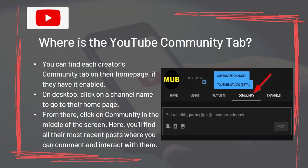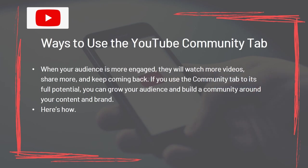You can find each creator's Community Tab on their homepage if they have it enabled. On desktop, click on the channel name to go to their homepage, then click on Community in the middle of the screen to find all their most recent posts where you can comment and interact. When your audience is more engaged, they'll watch more videos, share more, and keep coming back. If you use the Community Tab to its full potential, you can grow your audience and build a community around your content and brand.